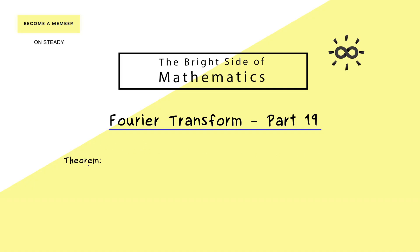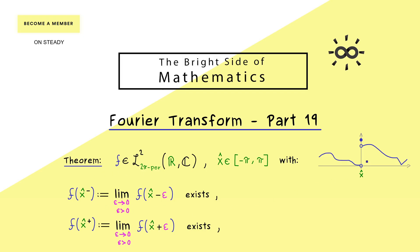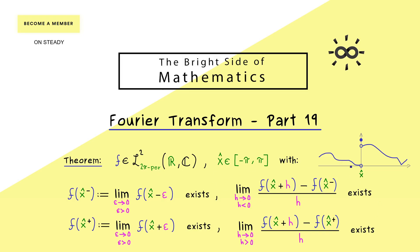We can immediately start talking about the topic of today. For a given L2 function which is also 2π-periodic, we fix a point x̂ in our interval from minus π to π. We don't need to be continuous at the point x̂, but some limits need to exist. If we approach the function from the left-hand side the limit has to exist, and from the right-hand side the limit also has to exist. We also want existence for the slopes when we approach x̂ from right and left. We don't need any equalities of the values — we just need the existence of these four limits.